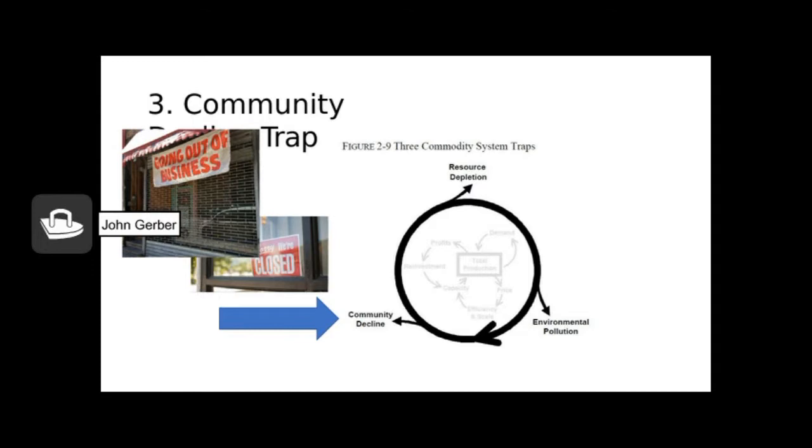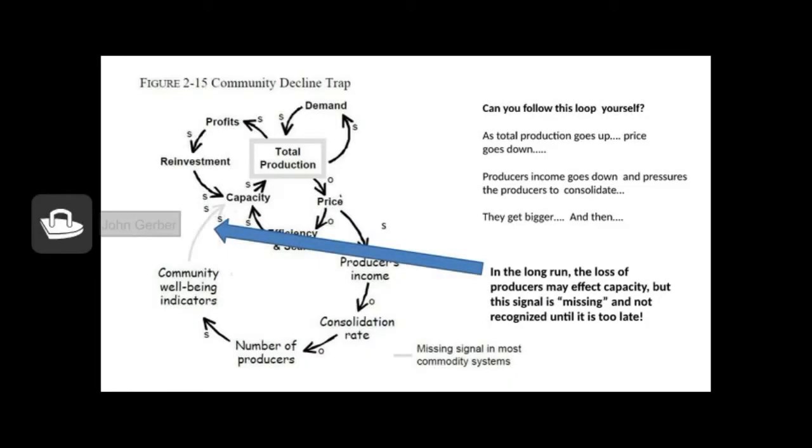Okay, let's move on to the third trap, the community decline trap. Once again, using our systems dynamic model, we see that as capacity increases, total production increases, dropping price, and therefore dropping producers' income. As producers' income drops there's a tendency to consolidate. That is, farms get bigger. You can either have a neighbor or you can own your neighbor's farm, one or the other. But with consolidation, we get bigger and bigger farms and fewer and fewer farm families.